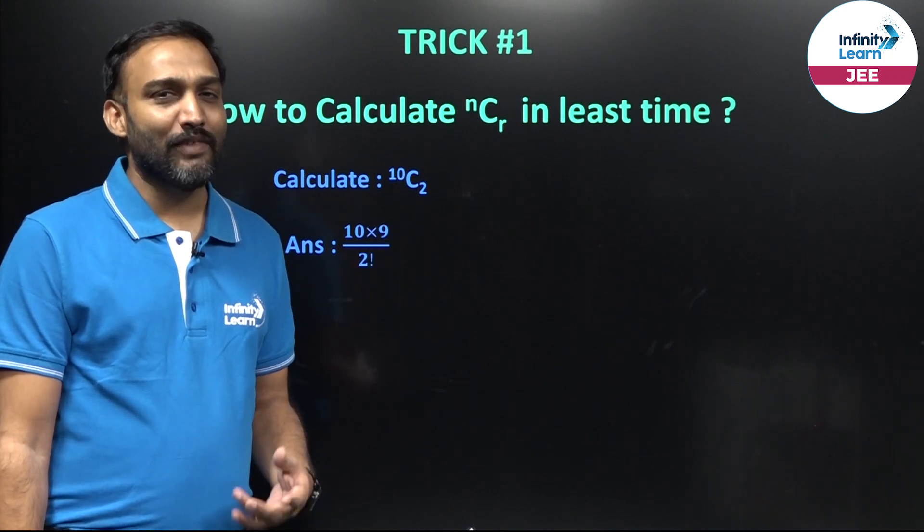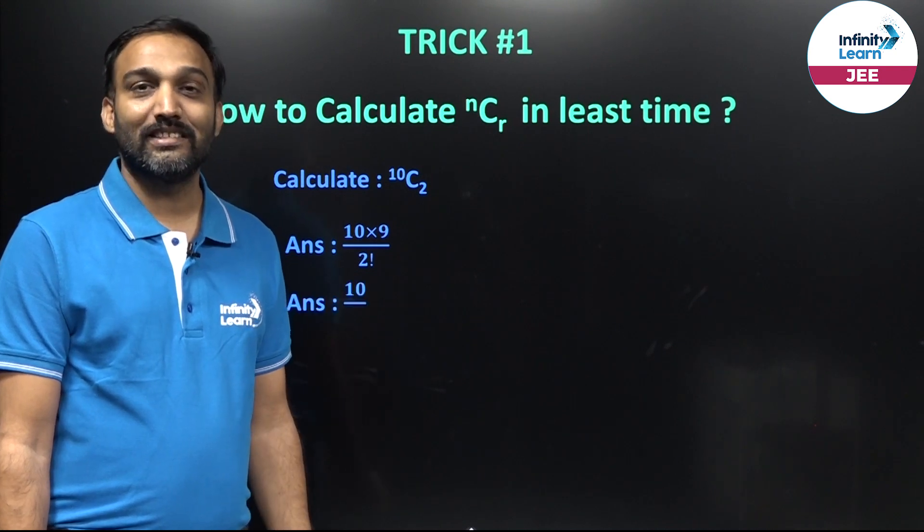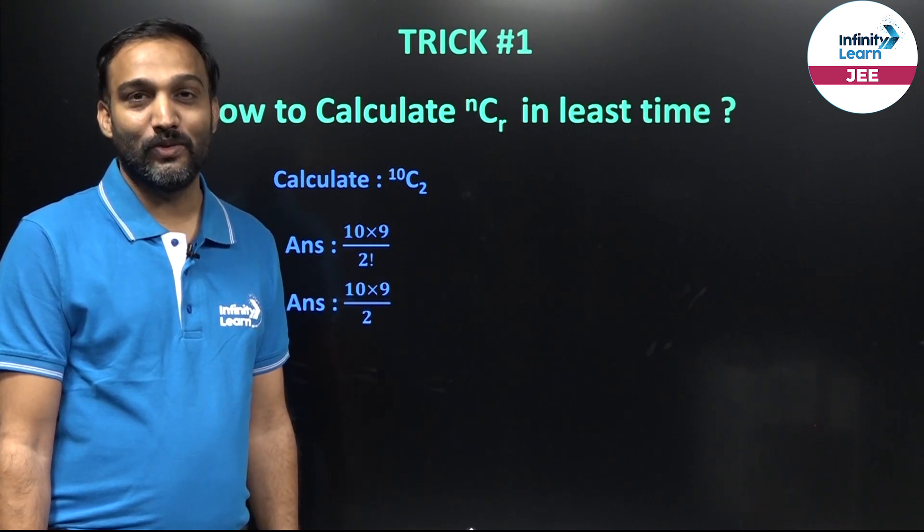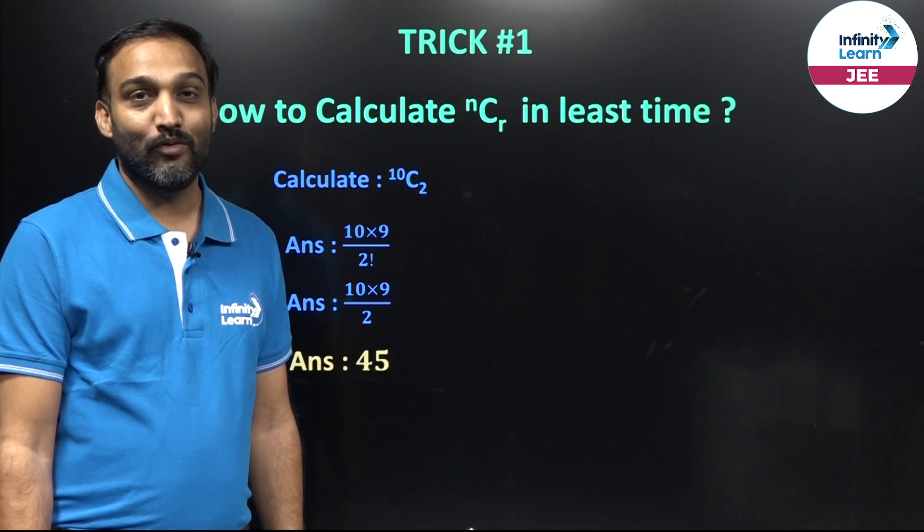Now, we all know the value of 2 factorial is 2. So, I can write this as 10 into 9 upon 2. Hence, my answer will be 45.